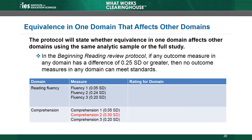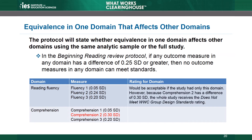This table of domains and measures illustrates an example of a study reviewed under the beginning reading review protocol. The outcome measures in the fluency domain are within an acceptable range. If the fluency domain were the only domain in the study, it might have received the meets WWC group design standards with reservations rating. However, the Comprehension 2 outcome measure has a baseline difference greater than 0.25 standard deviations. The protocol specifies that if any domain doesn't meet standards, then all domains do not meet standards. So neither the reading fluency nor the comprehension domains demonstrate equivalence, and the study as a whole does not meet WWC group design standards. Note that the analytic sample rules apply here as well — if the comprehension measures used a different analytic sample from the reading fluency measures, non-equivalence in the comprehension domain would not affect equivalence in the reading fluency domain.